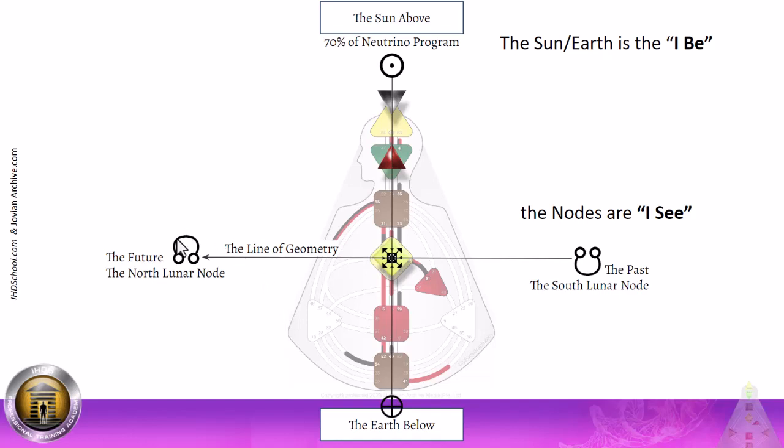So we have the future, that north lunar node, the past, that south lunar node, being sun and earth and seeing the nodes. On the conscious personality side, you are aware of that. Unconscious design side, good luck.